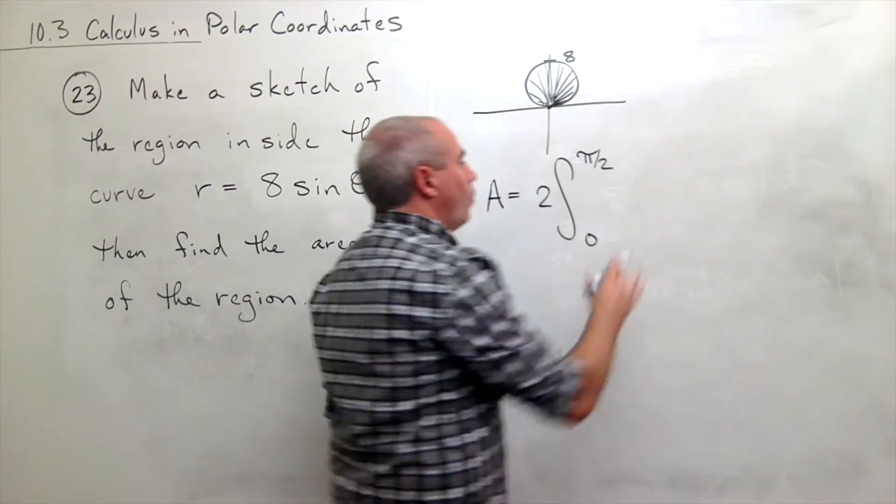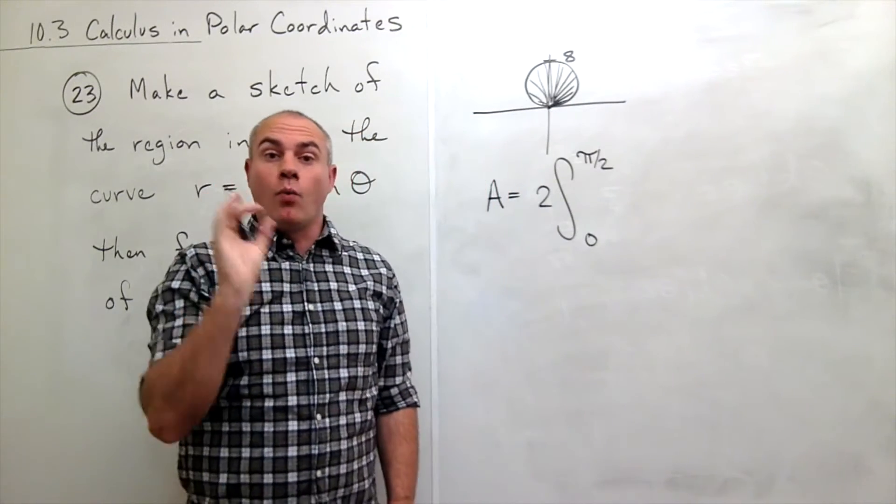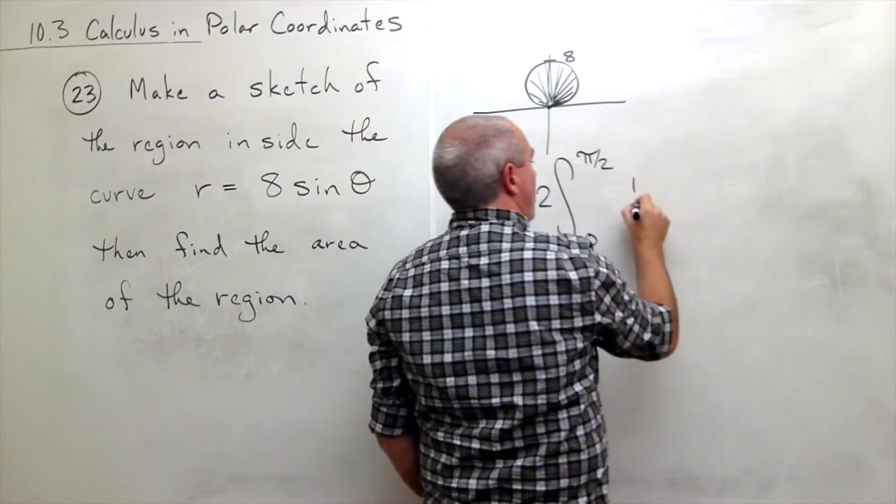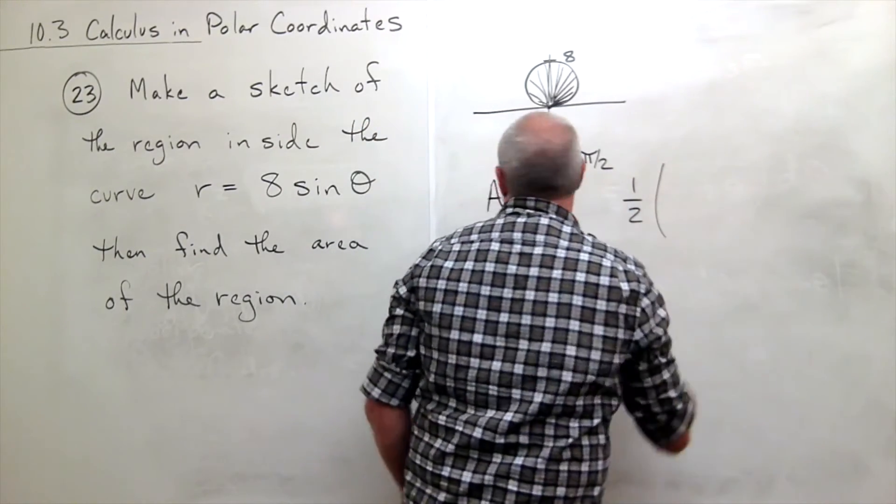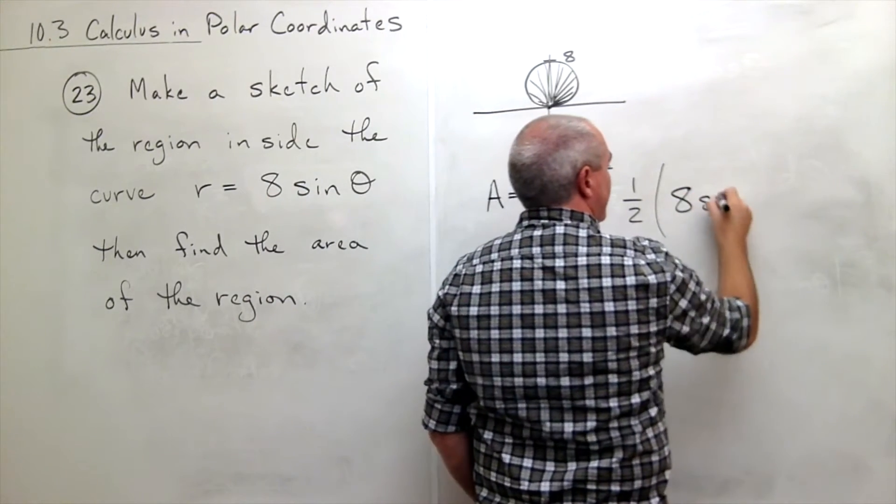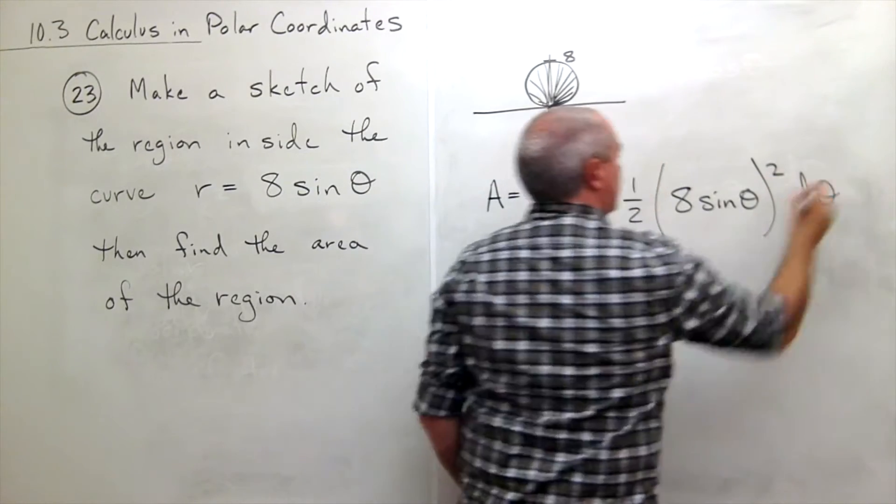Okay, so what goes inside? Inside goes I put in 1 half of r squared. So this is 1 half of r but r is 8 sine of theta. So 8 sine theta quantity squared d theta.